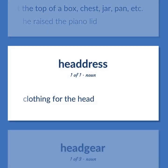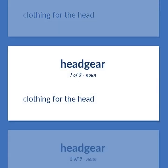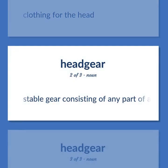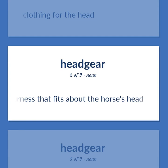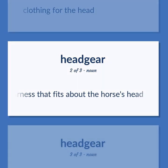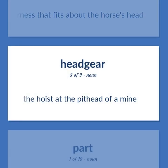Headgear: clothing for the head. Headstall: stable gear consisting of any part of a harness that fits about the horse's head. Headgear also refers to the hoist at the pit head of a mine.